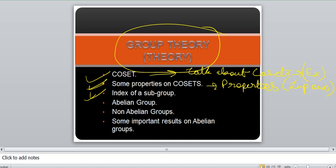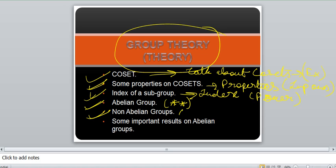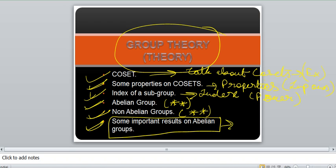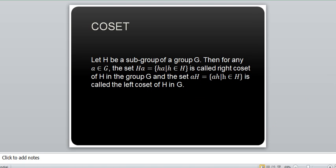Then we will talk about the index of a subgroup — what is the index, or the power, of the subgroup. Then we will talk about a very important part: mark a star — what is an abelian group? Then equally important: what is a non-abelian group? And then we will learn about some important rules on abelian groups — very important rules. We will give you mathematical examples, which are very much required for us to understand this part.